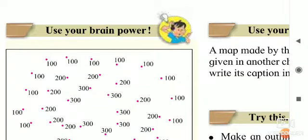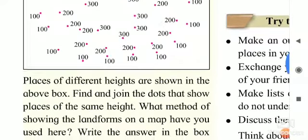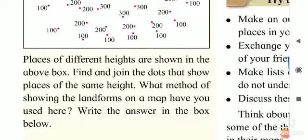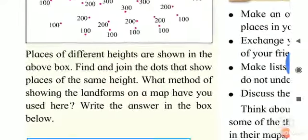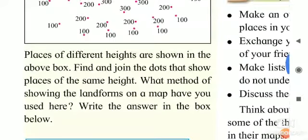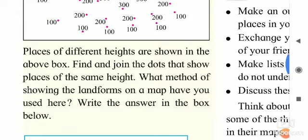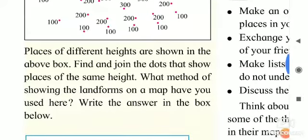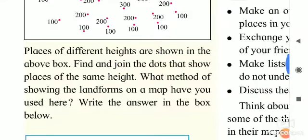Use your brain power — thoda socho. Places of different heights are shown in the above box. उसमें अलग-अलग ऊचाई वाले स्थान दिये गए हैं. Find and join the dots that show places of the same height. What method of showing the landforms on a map have you used here? समान ऊचाई वाले स्थानों के बिंदों को रेखाओं से जोड़ो, और उस पद्धती का नाम नीचे बॉक्स में लिखना है.